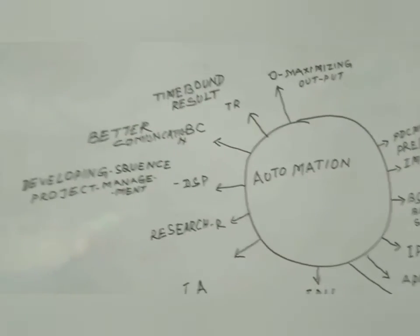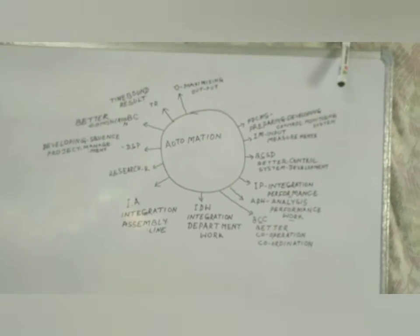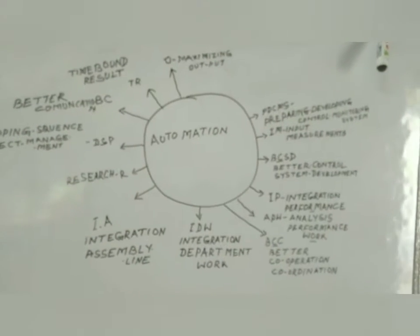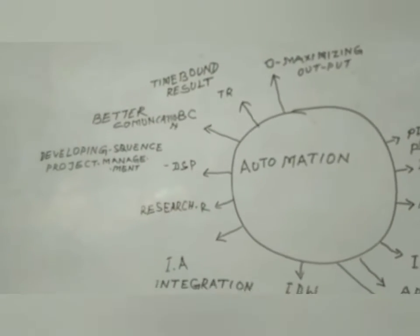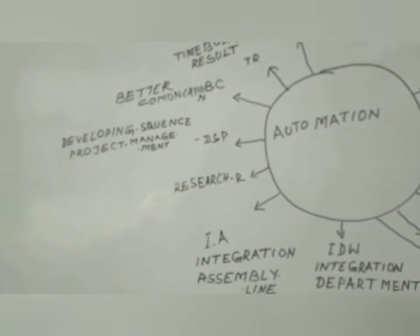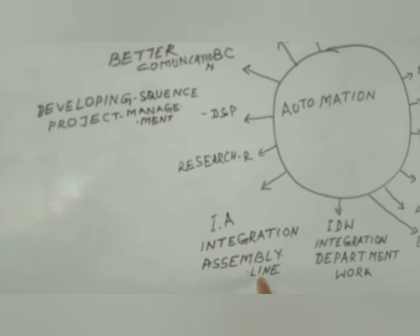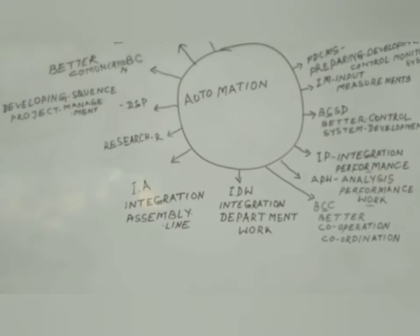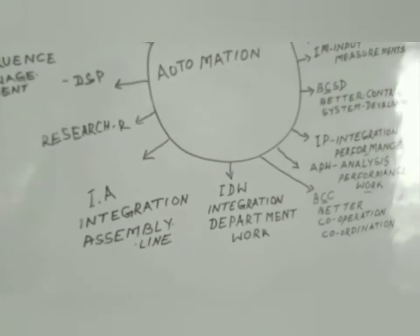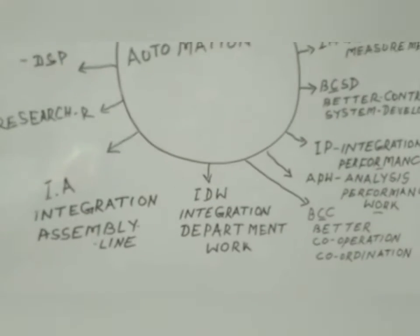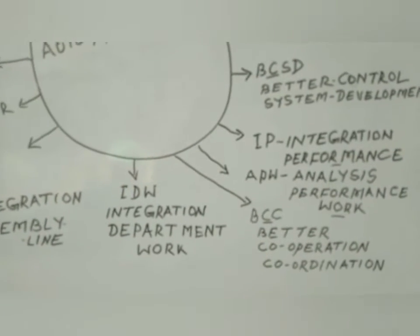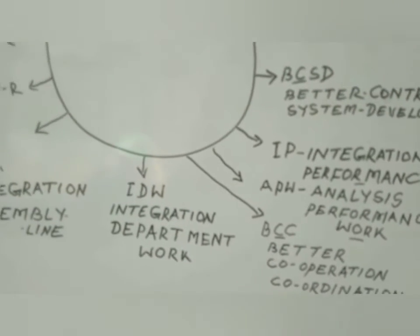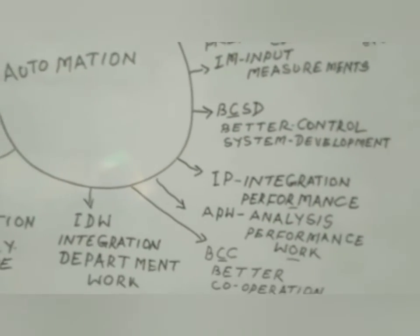In this diagram we have discussed the automation part, and this automation helps to identify how to integrate the assembly line of a particular manufacturing plant. Integration in assembly line means integrating various works and various parts with the assembly line. Then integration with departmental works, which is also very much important. Next is better cooperation and coordination, which includes the performance between the assembly line, automation, and the project management process.